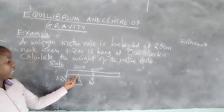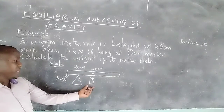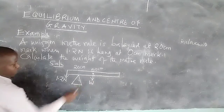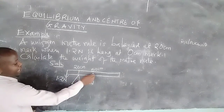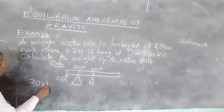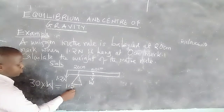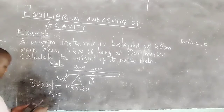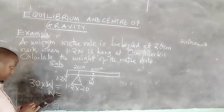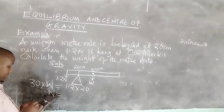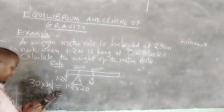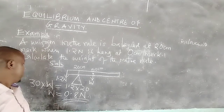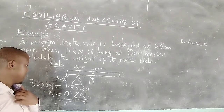Considering moments about the pivot: the clockwise moment is due to the weight of the rule, and the anti-clockwise moment is due to the 1.2 newton force. The distance from the pivot at 20 cm to the center at 50 cm is 30 cm. So: weight × 30 = 1.2 × 20, giving weight = 1.2 × 20 ÷ 30 = 0.8 newtons. The weight of the meter rule is 0.8 newtons.